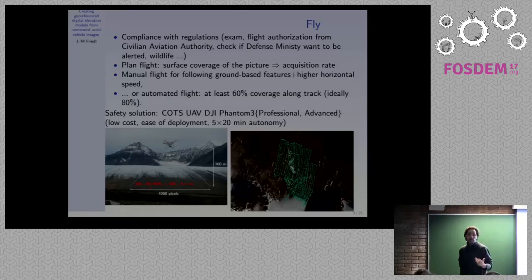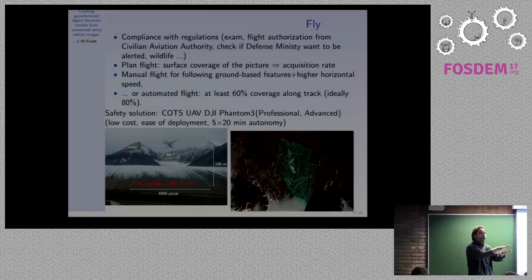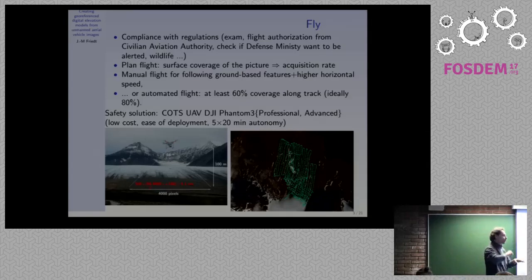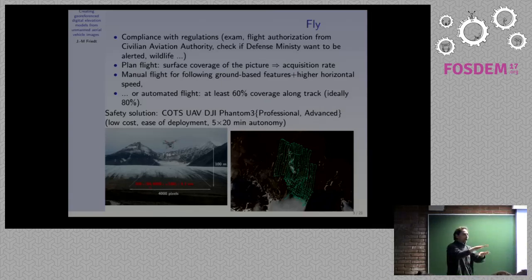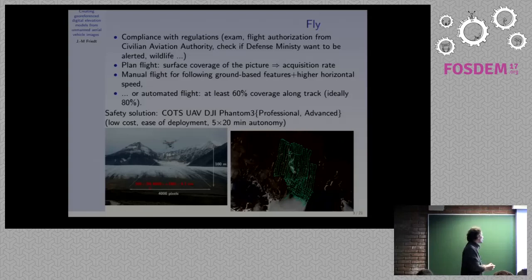Once you get all the authorizations, you have to plan your flight. Flight planning for making digital elevation models requires that you have enough surface coverage from one picture to the next — your pictures must overlap by at least 60%. MicMac recommends 80% overlap. Once you've decided your horizontal velocity — in my case typically 10 meters per second — and you know your altitude over the area, you can calculate how often you need to take an image. Flying at 100 meters coverage at 10 meters per second, I need to acquire one picture about every two seconds, which is why a 20-minute flight generates 600 to 900 images.